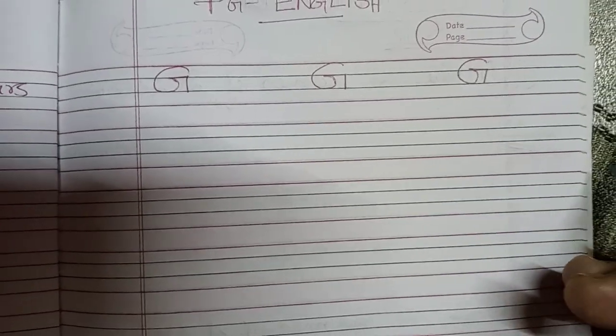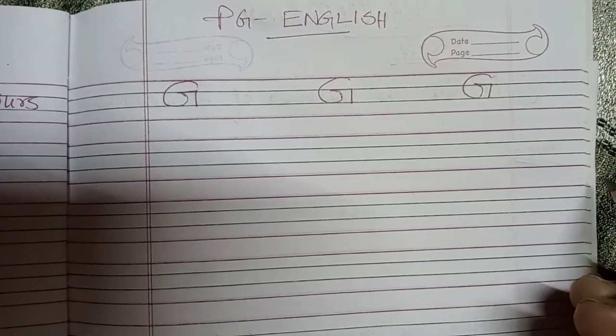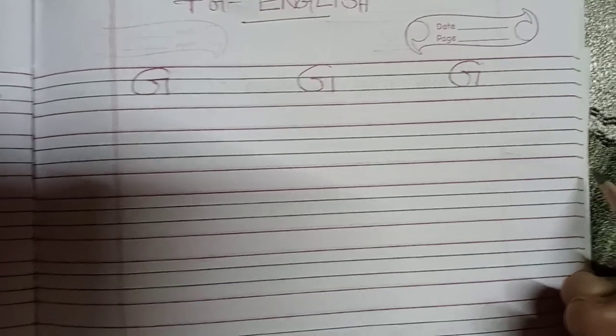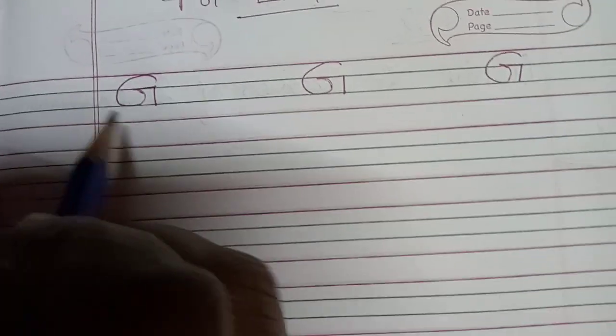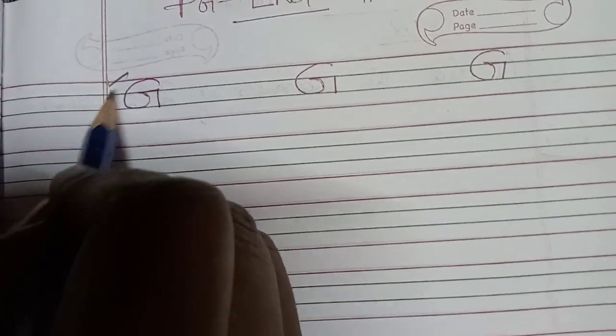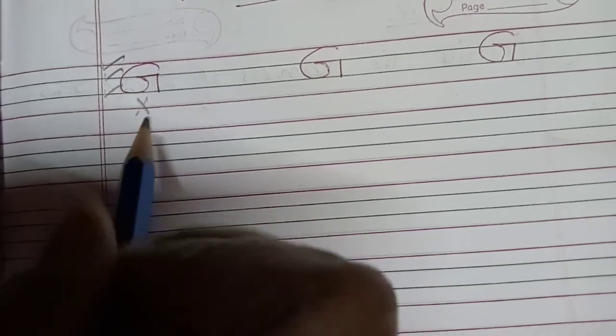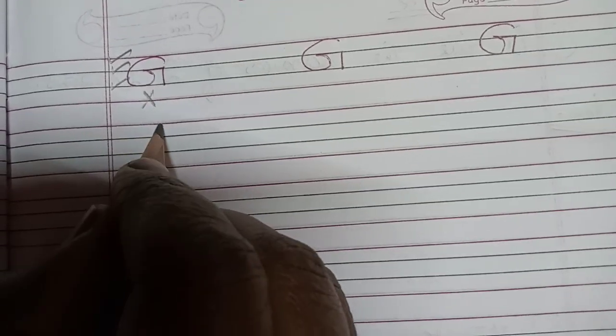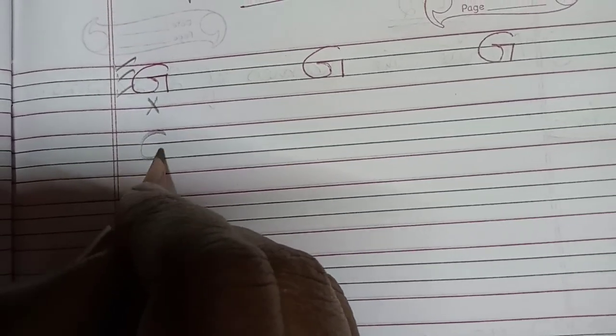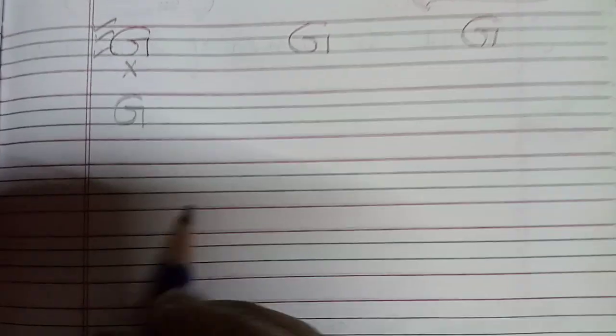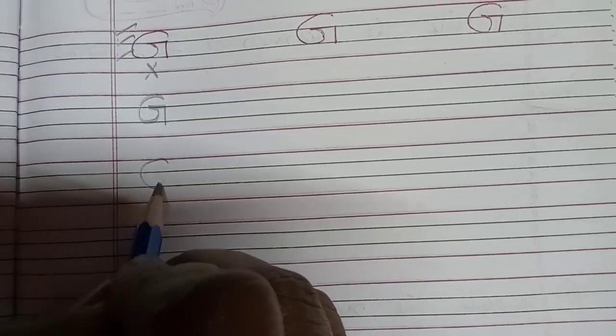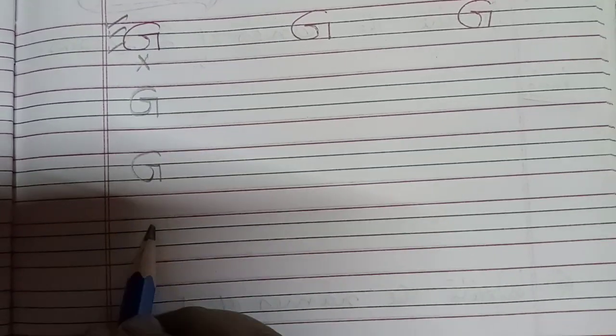Hello class, this is PG English class. Today we learn to write capital letter G. You have to follow three lines — you don't have to write in the fourth line. G is for girl, or G is for goat. You have to say one word also.